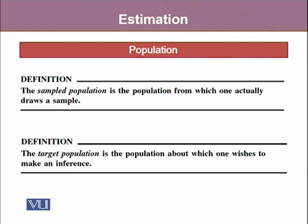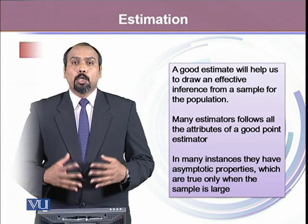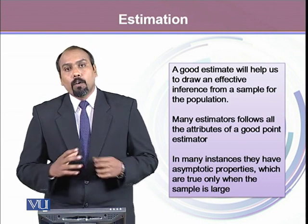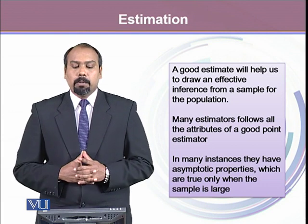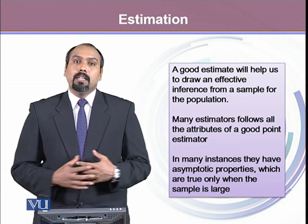To summarize: the population of Pakistan with CHD is the larger population, the population of CHD patients in Lahore is the target population, and the CHD population from Punjab Institute of Cardiology is our sampled population. There are a few properties of a good estimator: it should be unbiased, efficient, sufficient, and consistent, among others. A good estimator will help us draw effective inferences from a sample for the population. Many estimators follow all the attributes of a good point estimator, and in many instances they have asymptotic properties which are true only when the sample is large.